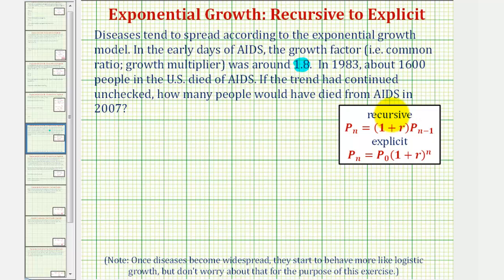Looking at the recursive and explicit equations for exponential growth, 1 plus r is the growth factor, which means in this situation, 1 plus r is equal to 1.8. Notice how this also tells us that r, the growth rate, is 0.8 or 80%. So the growth rate is 80% per year, but the growth factor or growth multiplier is 1.8.